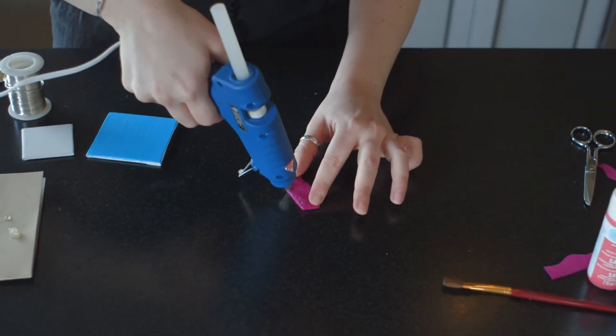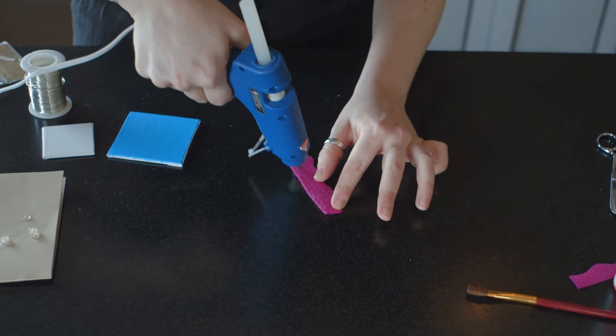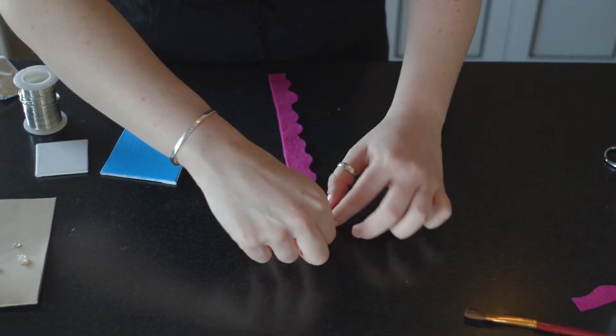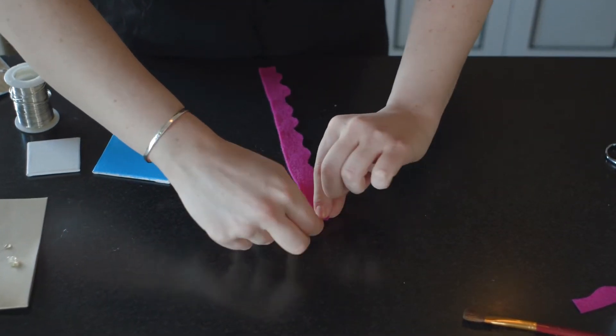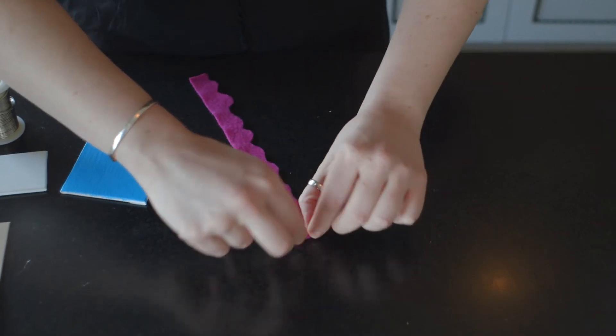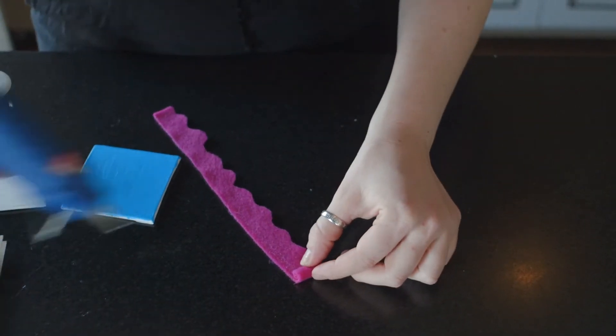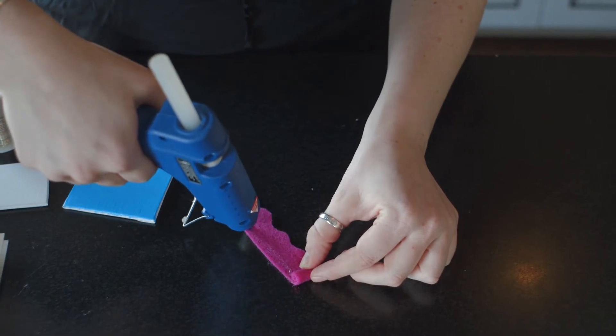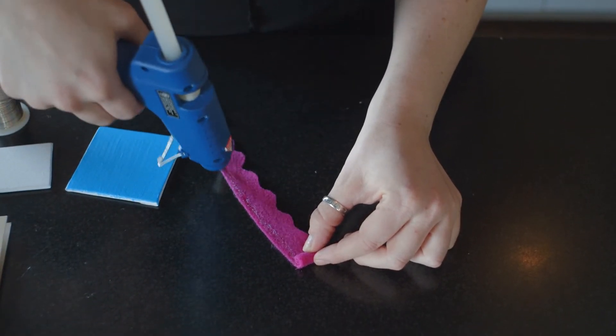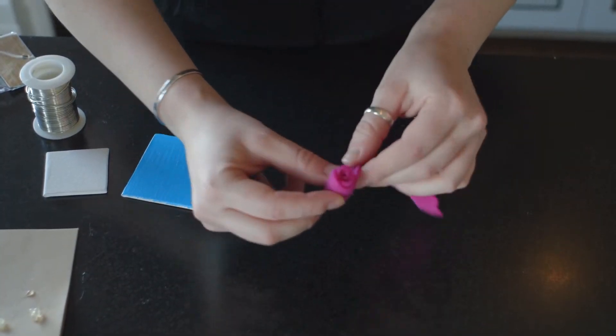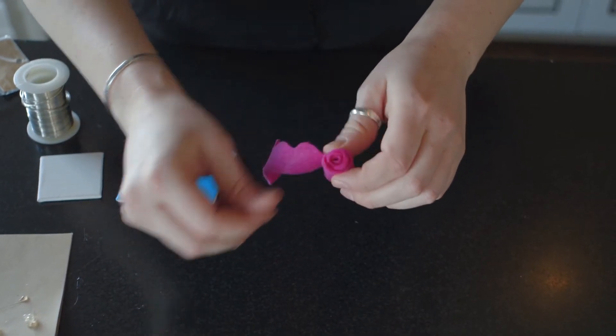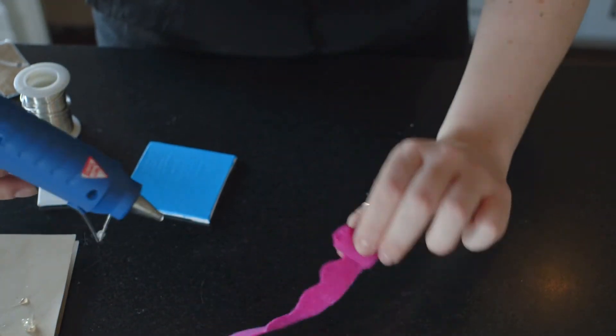Then the next step is you're going to take your glue gun and add a little strip of glue at the bottom. Watch those fingers. And then start to roll it up along the glue. And just add more glue as you go. And you can see, as you're rolling, it's starting to take shape as the rose.